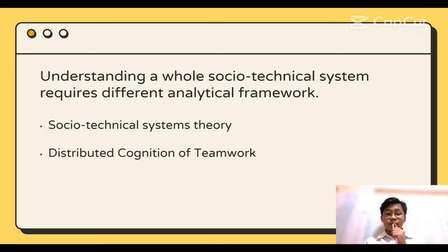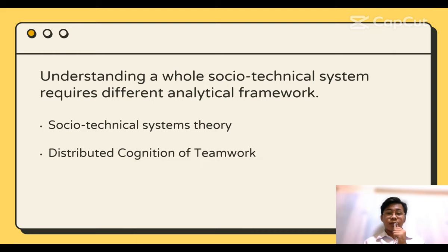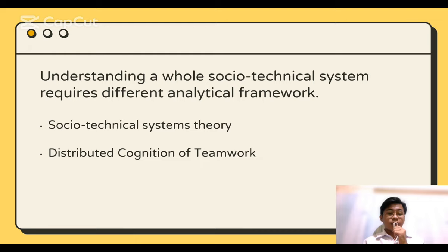Understanding a whole socio-technical system requires a different analytical framework. One is socio-technical system (STS) theory, which makes explicit the fact that the technology and the people in a work system are interdependent, rather than trying to optimize either the technical system or the social system independently of each other. STS suggests that this interdependency can be recognized and the system be treated as a whole. Number two is distributed cognition of teamwork, an approach to studying the nature of cognitive phenomena across individuals, artifacts, and internal and external representations.